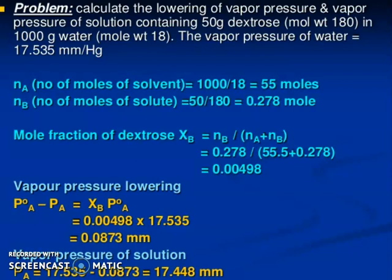You have calculated here, 0.00498 into 17.535 equals 0.0873 mm. This is the mm pressure. Now, Vapor Pressure of solution, PA, you just subtract this portion, you will get the Vapor Pressure of solution. And this is a very important problem. If you understand this problem, then it will be easy for you to understand class 12 solution chapter.